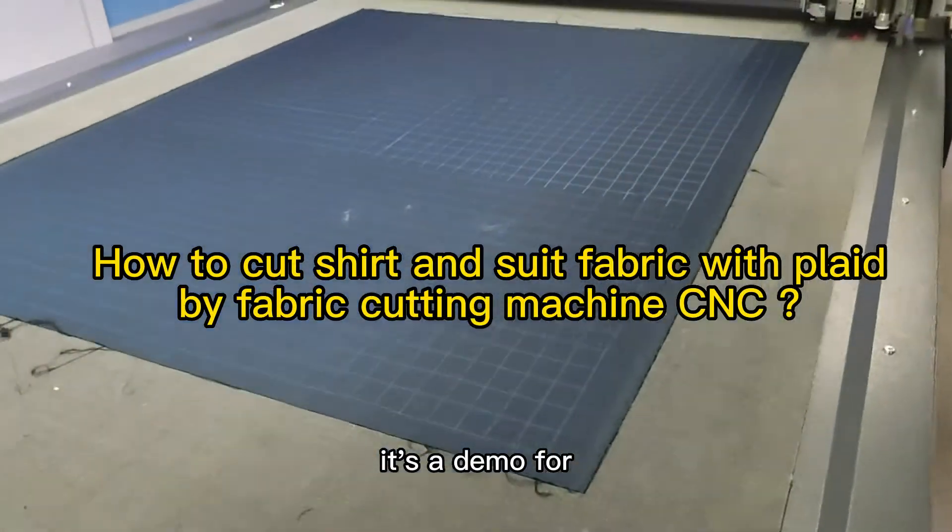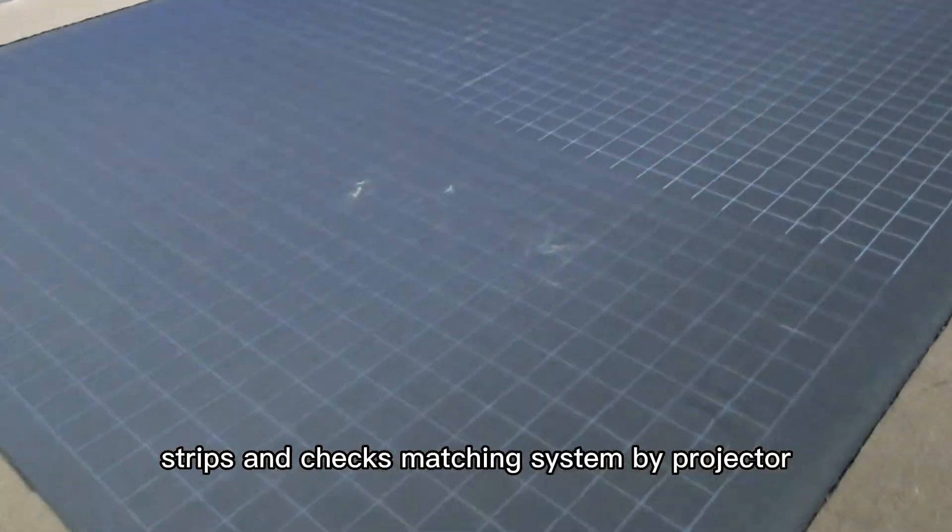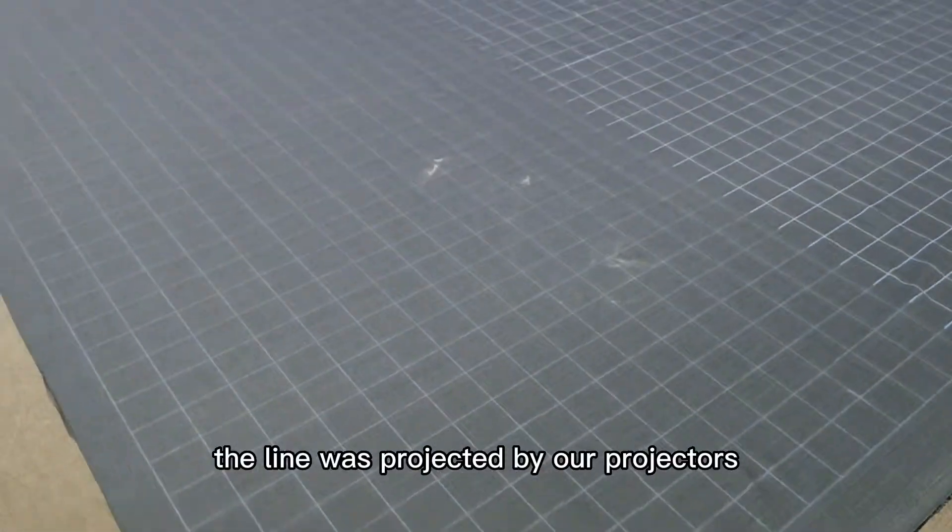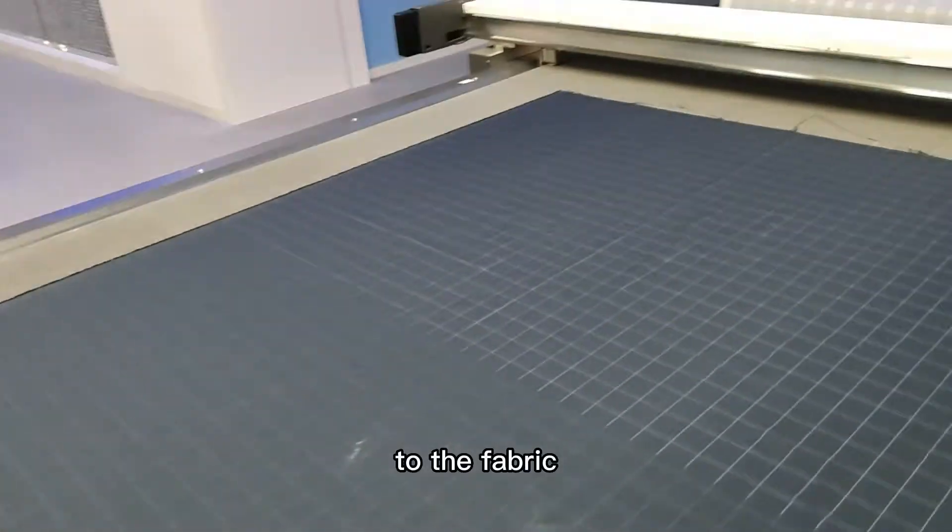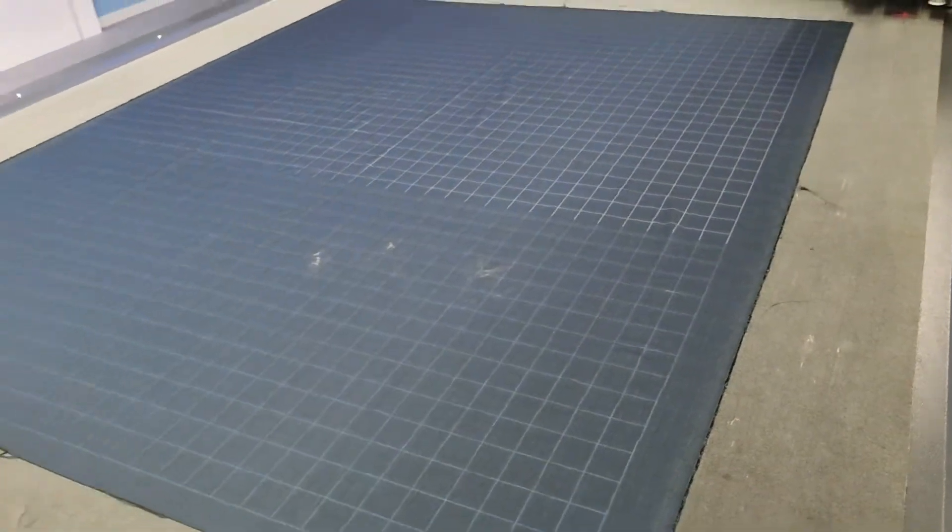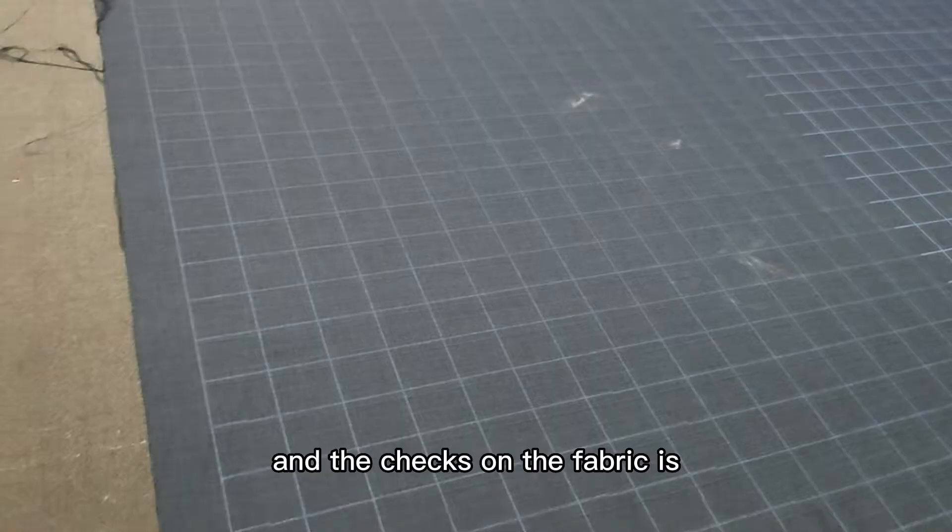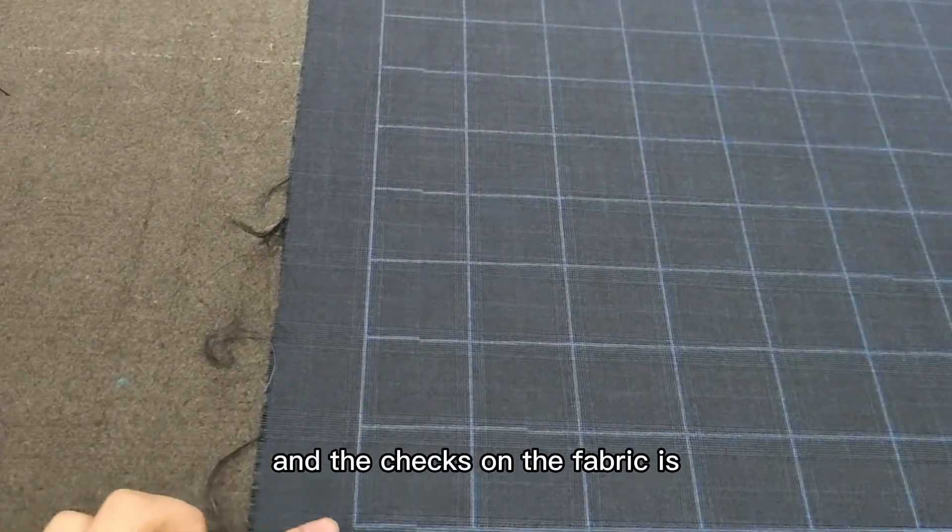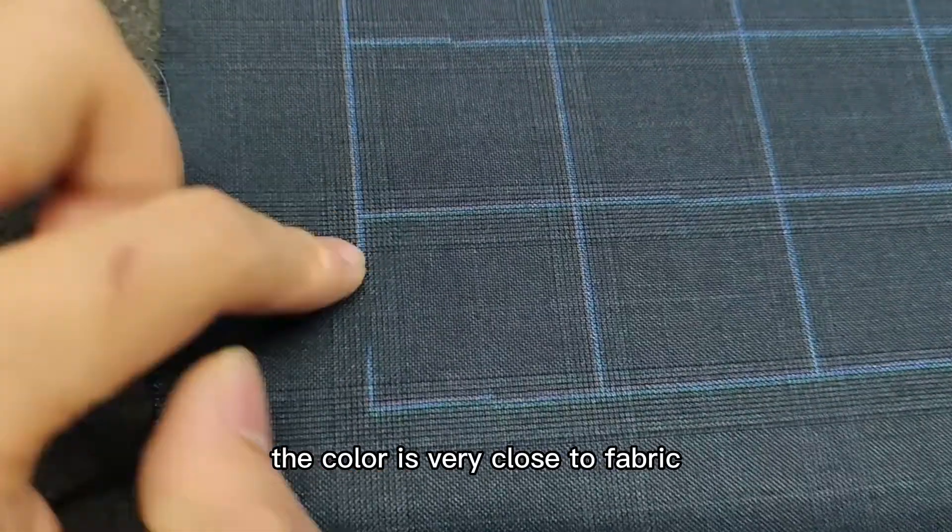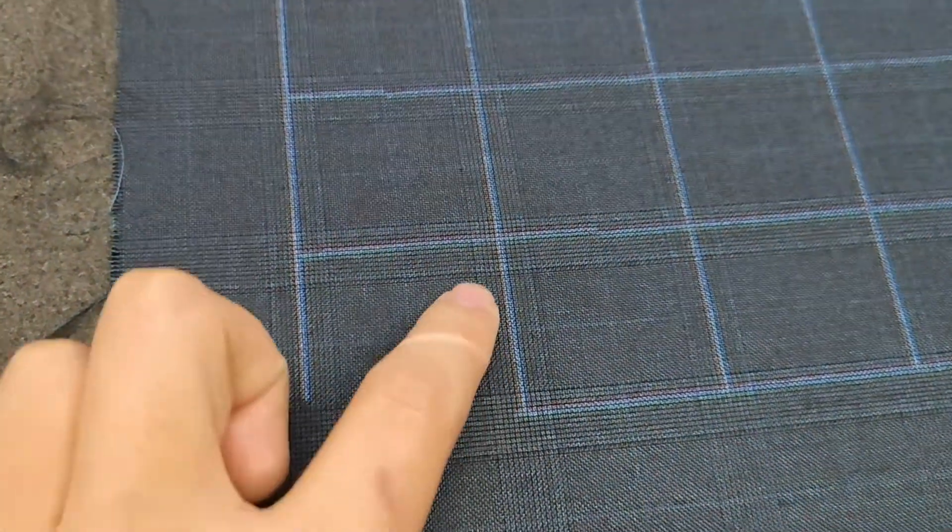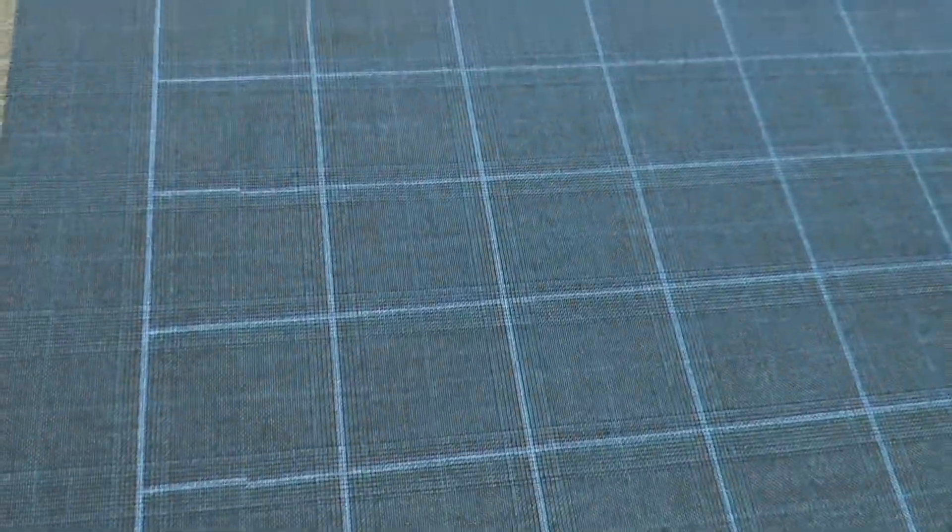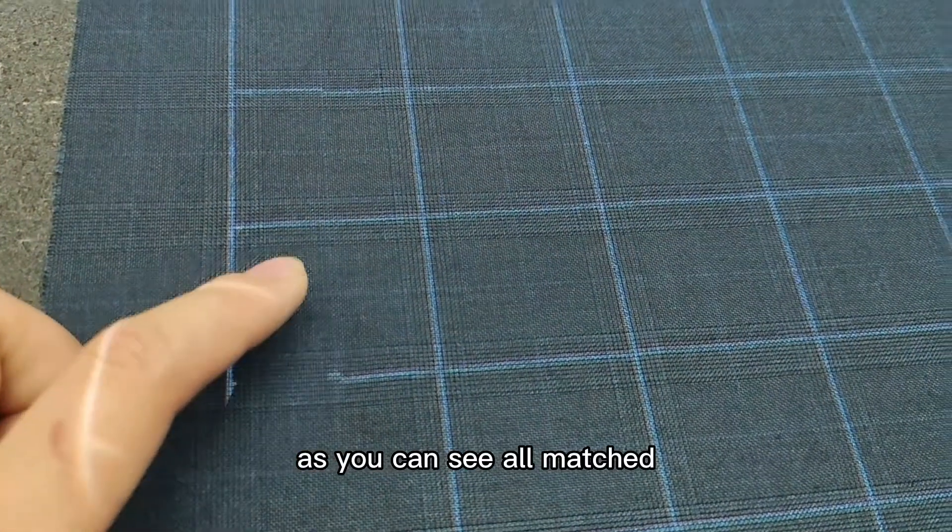This is a demo for strips and checks matching system by projector. As you can see, the lines were projected by our projectors to the fabric. The checks on the fabric, the color is very close to the fabric, so we use the projector to make it clear. As you can see, all matched.